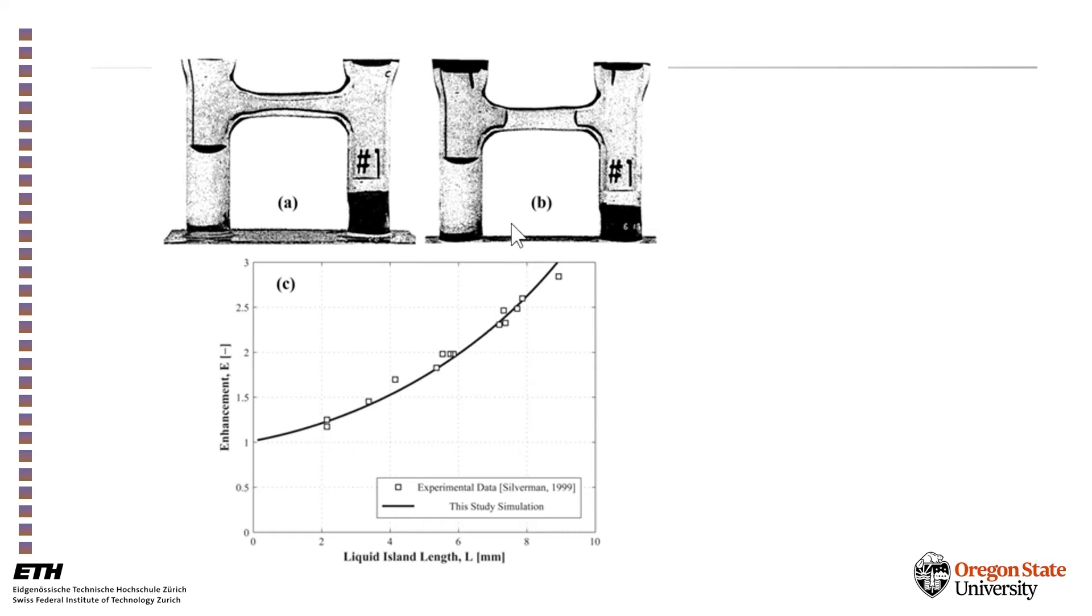And what you see, the longer the island of water, the higher the apparent diffusion of vapor through this state, basically confirming that liquid bridges act as short circuits to the diffusion process.